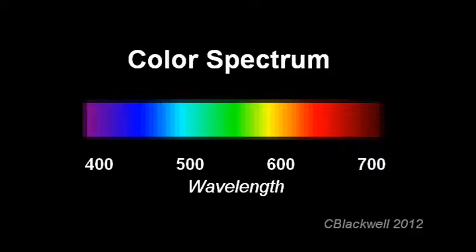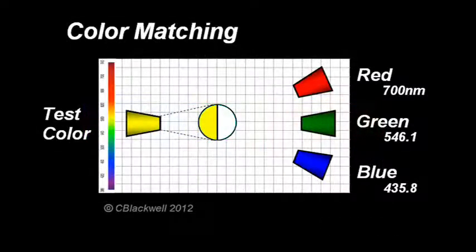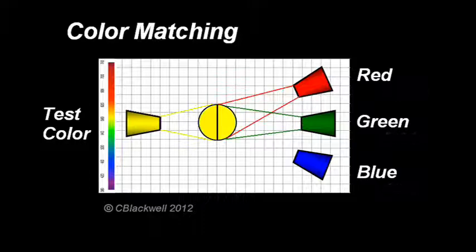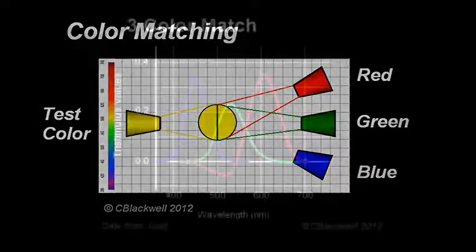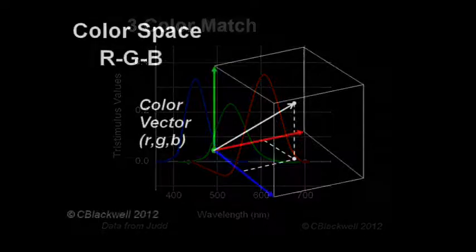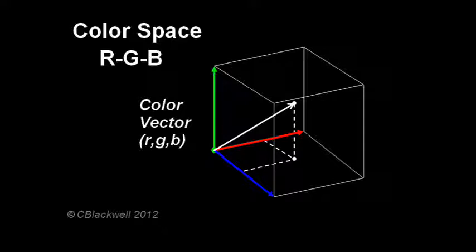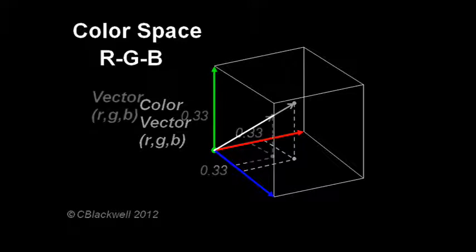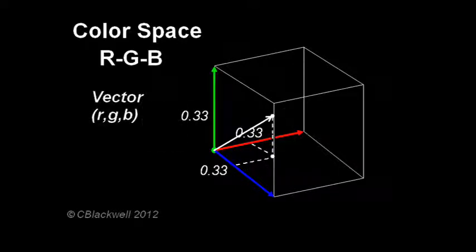For example, if we choose the color yellow from the middle of the spectrum, we can match that with equal amounts of red and green light. The amounts of each color — red, green, and blue — required to match the different parts of the spectrum are shown on this graph. The three color matching values can also be represented by a vector in color space with three coordinates, as shown here. The three coordinates are the values of the red, green, and blue that made the color match.